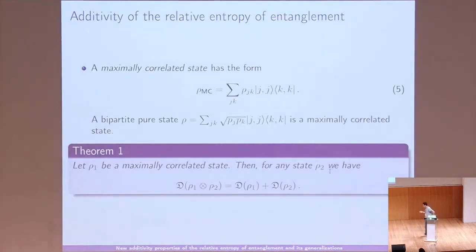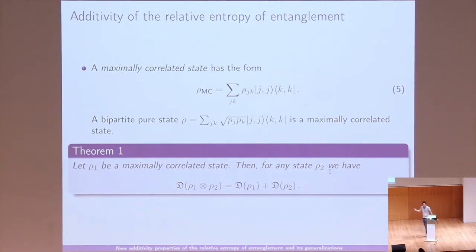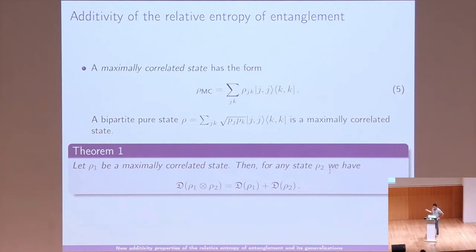Let's go to the main results. The first result concerns maximally correlated states. A maximally correlated state is a bipartite state of the form ∑_{j,k} ρ_{jk} |jj⟩⟨kk|. You can think of it as a generalization of a bipartite pure state written in the Schmidt basis. The maximally correlated state is more general but has the same structure. Our first result is: if one state ρ₁ is maximally correlated — which includes all pure states — then for any state ρ₂, the relative entropy of entanglement is additive.